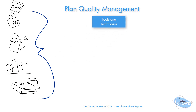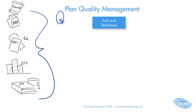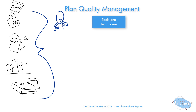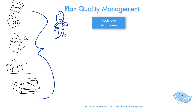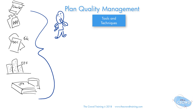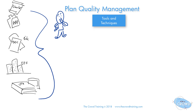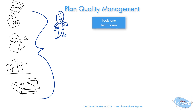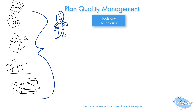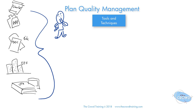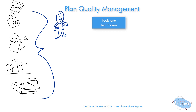Now let's go into the various tools and techniques of planning quality management. The first is expert judgment. The thinking behind expert judgment is that there are various people in the know — especially in quality management, you're probably going to have quality professionals who know the standards and methodologies for collecting data, setting up the right metrics, and performing quality control.